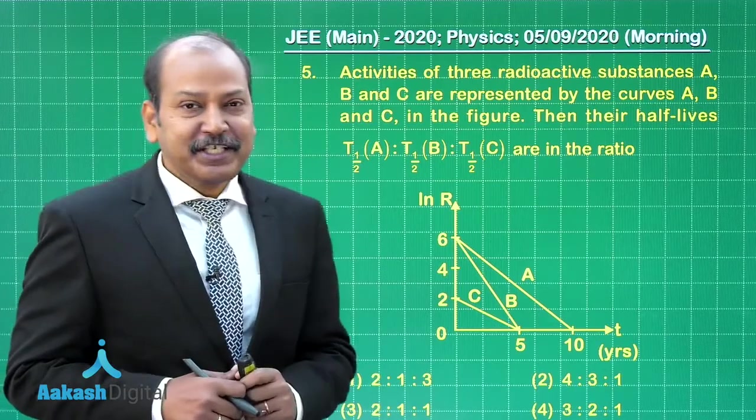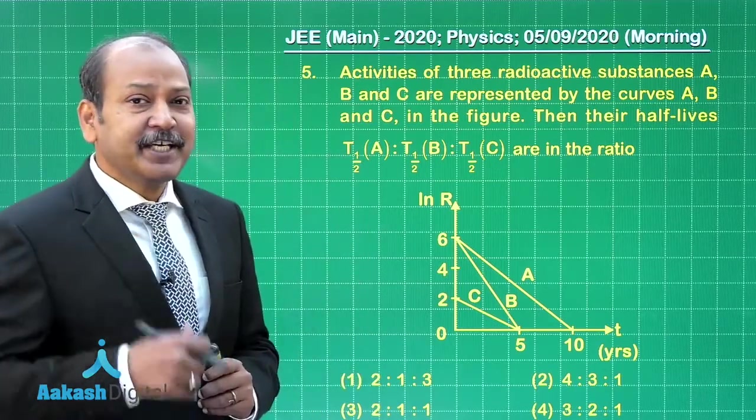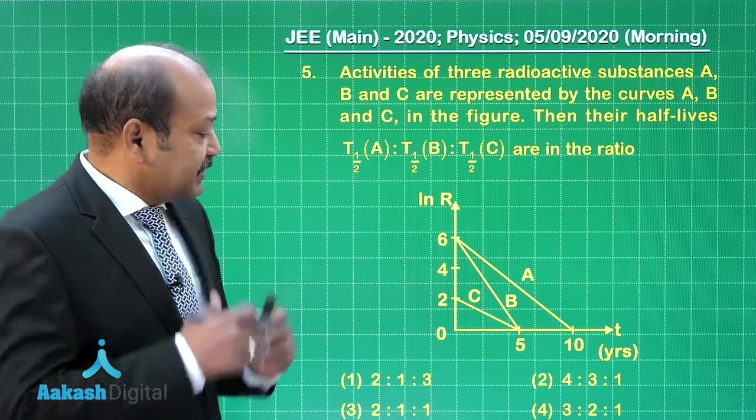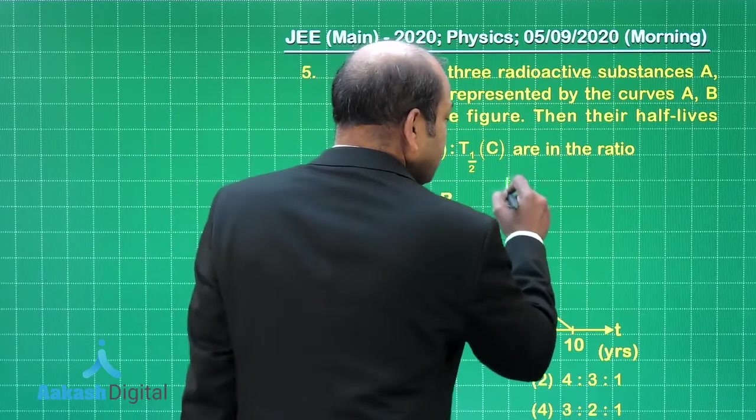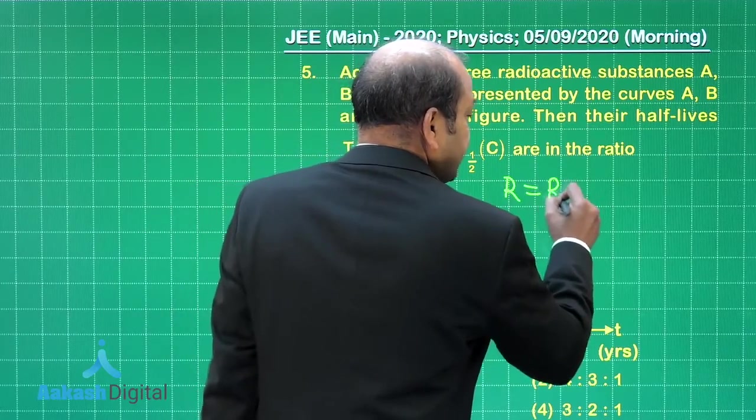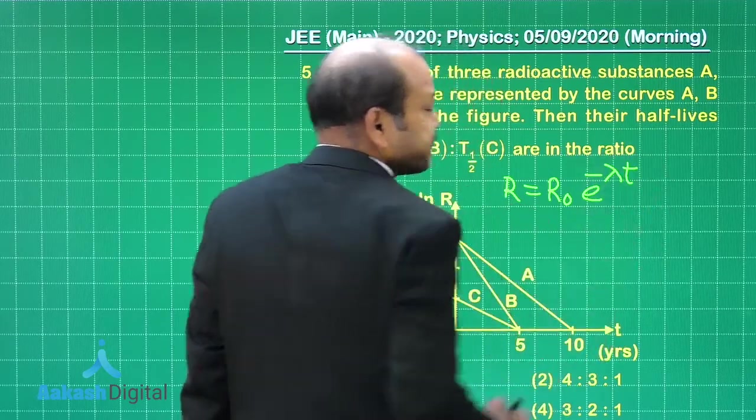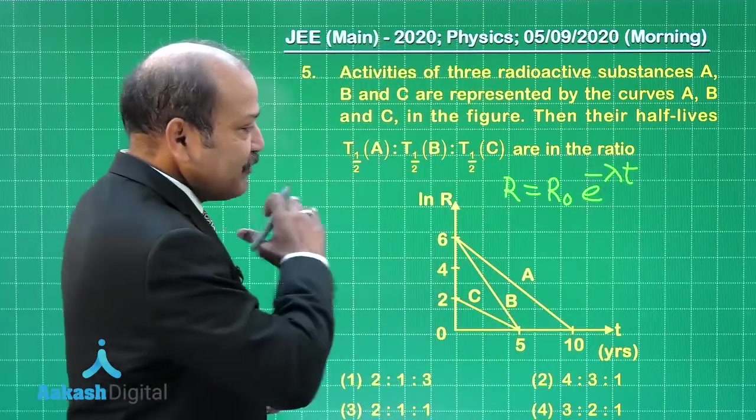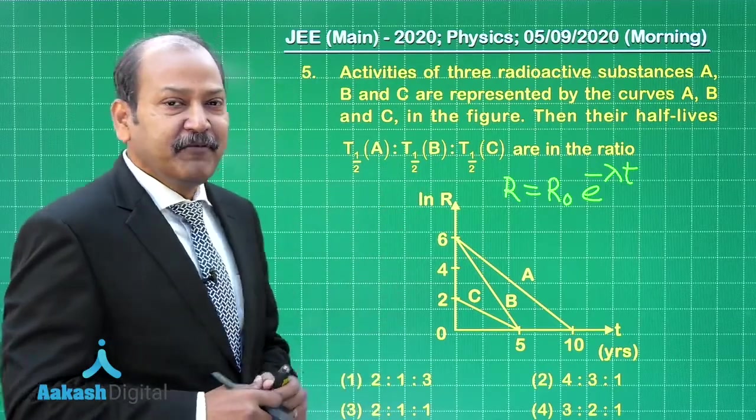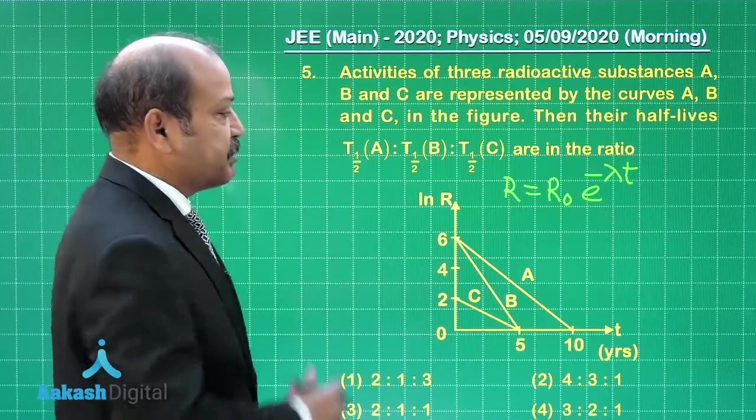Clearly the question is from the topic nucleus and it is about radioactive decay. The expression for the activity is given as R equals R_naught into e to the power minus lambda t, where lambda is the decay constant. And if we take log on both sides, we in fact get the equation of the straight lines that have been provided.